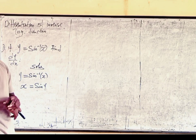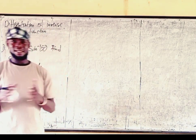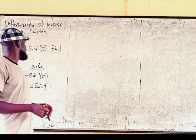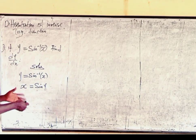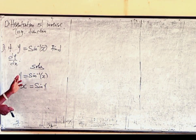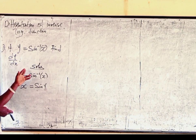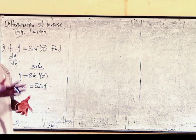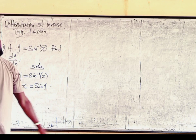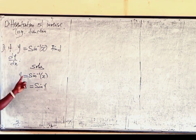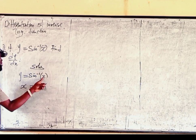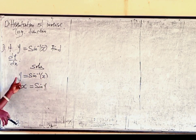It is the inverse of each other. Remember, if we have 0.5 equal to sin x, then x will be equal to sin inverse of 0.5. The same way: if y is equal to sin inverse of x, it means that x is also equal to sin y, without the inverse.